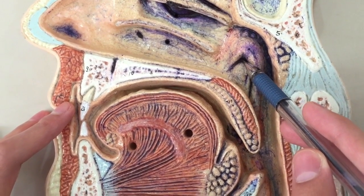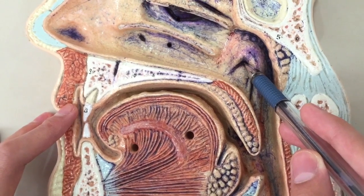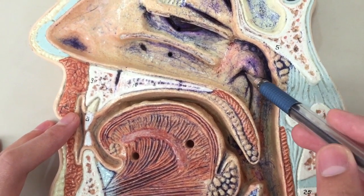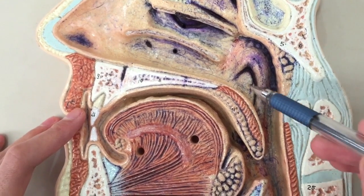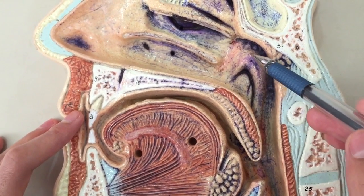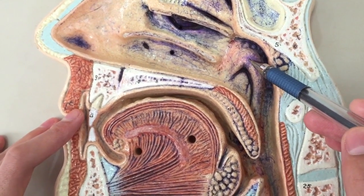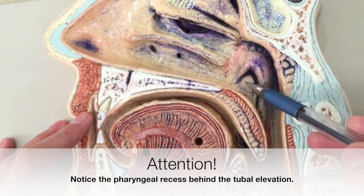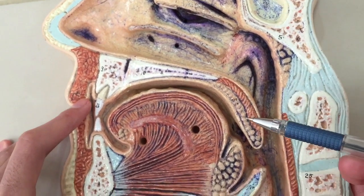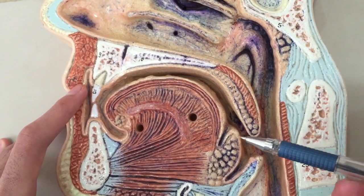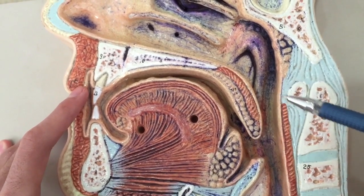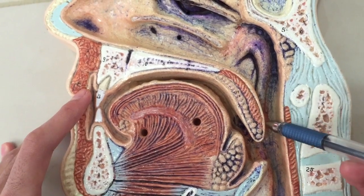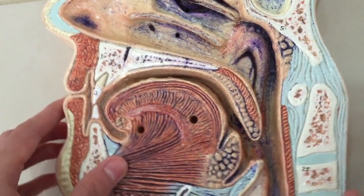The auditory tube, also called the Eustachian tube or tympanopharyngeal tube, forms an elevation which is called the tubal elevation. Here we can see the tubal elevation, and in this part of the pharynx we have a fold called the salpingopharyngeal fold.